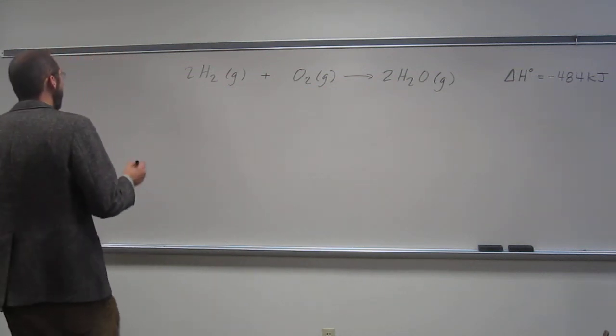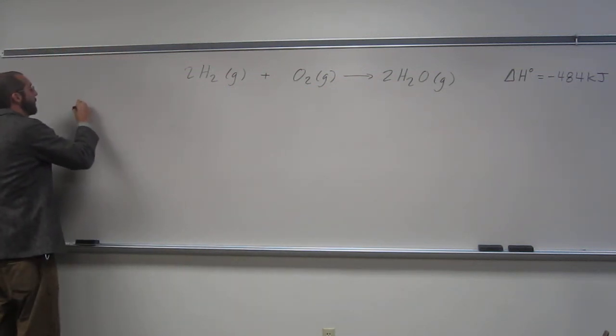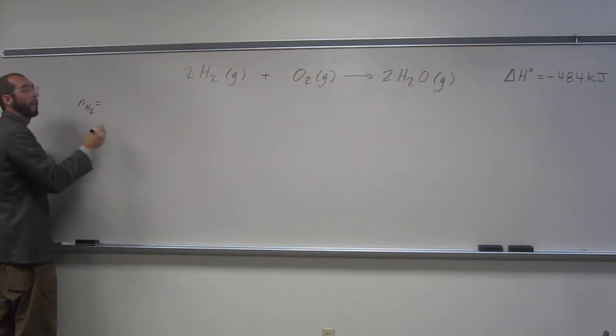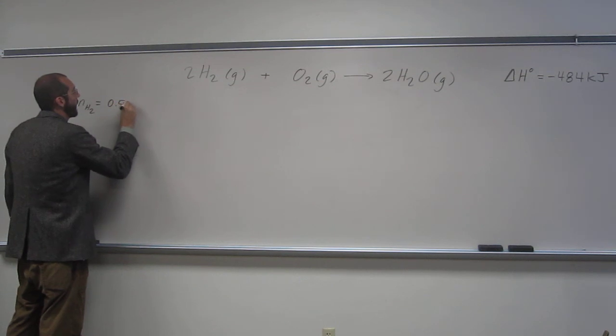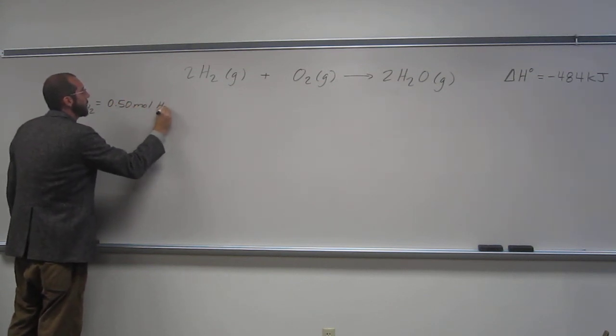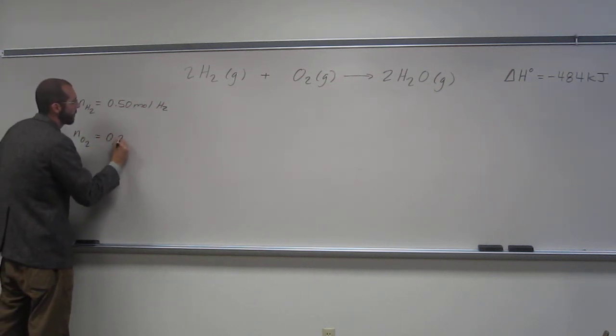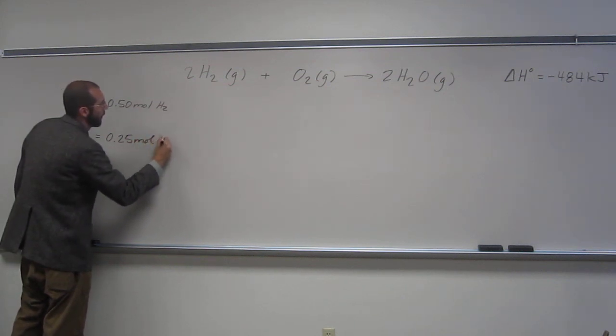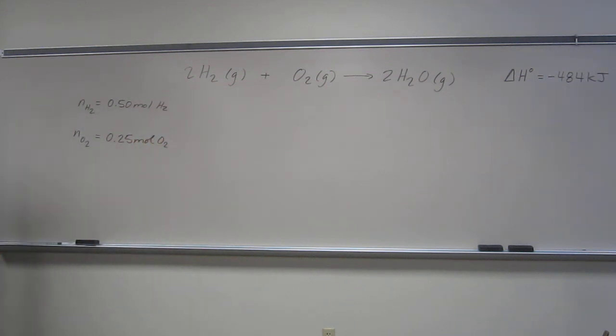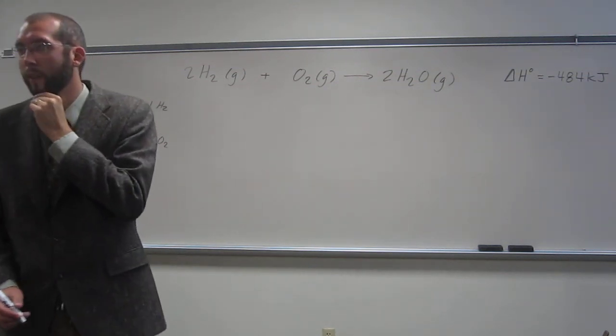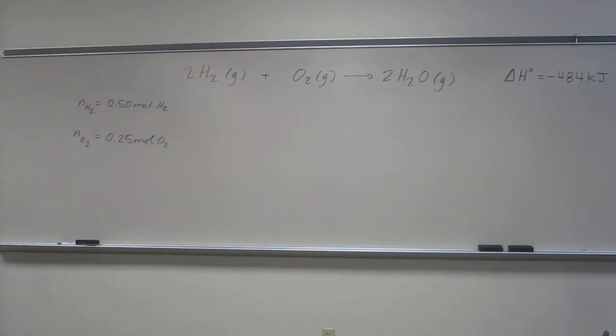But some things it's telling us are the number of moles. So we've got the number of moles of hydrogen which is 0.50 moles of hydrogen, and we've got the number of moles of oxygen. Why do you think they gave us these two numbers of moles? What do you think we've got to figure out? What do we normally have to figure out when we're doing these types of things?